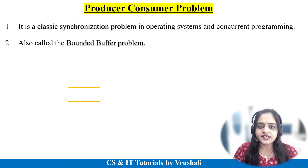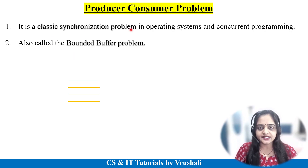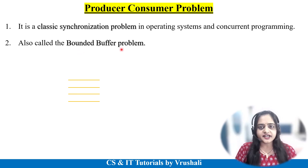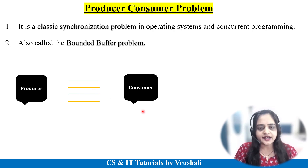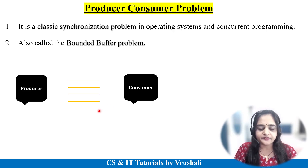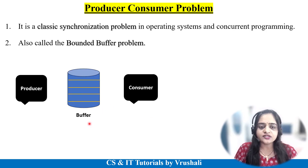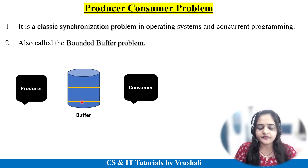Now what is the producer-consumer problem? The producer-consumer problem is one of the classic synchronization problems in operating system, which is also called the bounded buffer problem. In the diagram, on one side there is the producer and on the other side there is the consumer. The producer produces data, and the consumer uses that data. In between them there is a particular buffer — a shared database. The producer produces data, which is stored in the buffer, and the consumer uses that data from the same buffer. This is a shared buffer between the producer and the consumer.